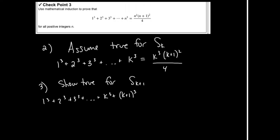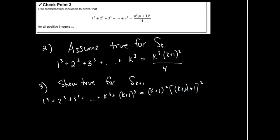I'm showing that that's true when the right-hand side has n equal to k plus 1. So everywhere I see an n, I'm replacing it with k plus 1: n becomes (k+1), then plus 1, which I write in brackets — showing that I'm replacing n with k plus 1, all over 4. Now I have to show this part.